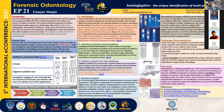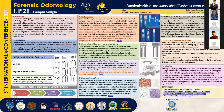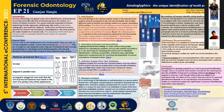Forensic odontology has played a key role in identification of weak, forced, and disfigured bodies like that of drowned persons, fire victims, victims of vehicle accidents, etc. The various methods employed in forensic odontology include rugoscopy, cheiloscopy, bite marks, tooth marks, radiographs, etc. Tooth prints are the term used to describe the enamel rod and patterns. Ameloglyphics is the term used for the study of patterns of enamel rods. The uniqueness of the tooth print could be used as a valuable tool in forensic science for personal identification.